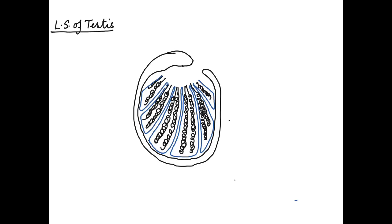These coiled tubes are the seminiferous tubules. This extends by straight tubules to form a network. I am drawing the network here. This network then opens out outside the testes into the epididymis.